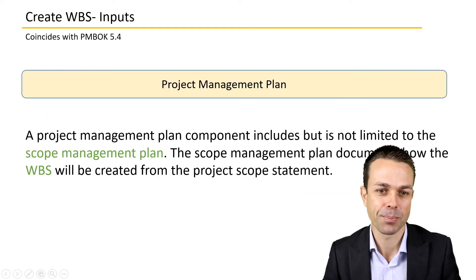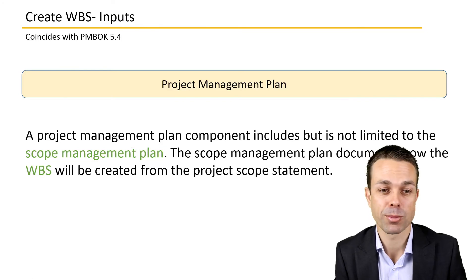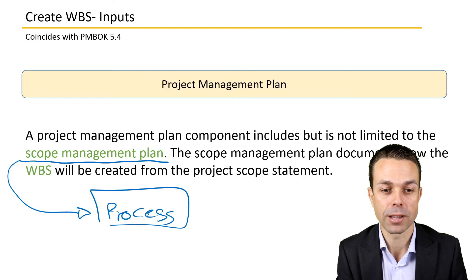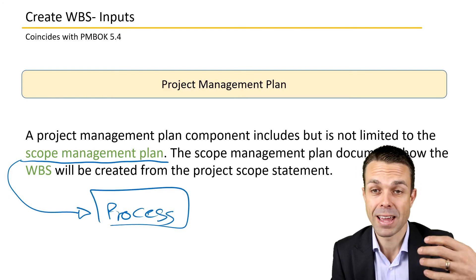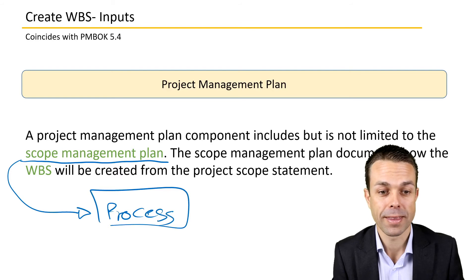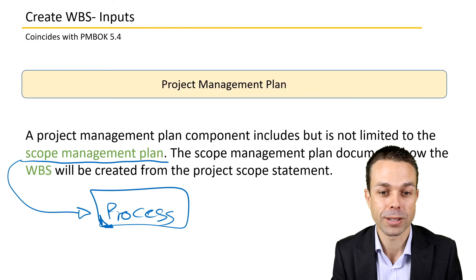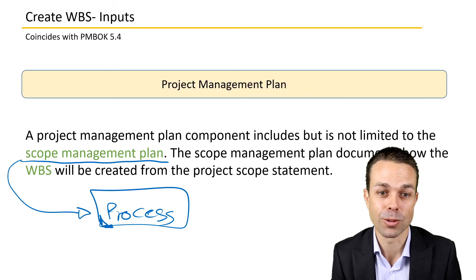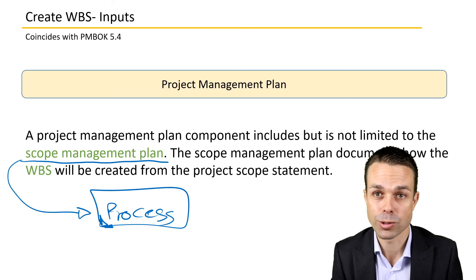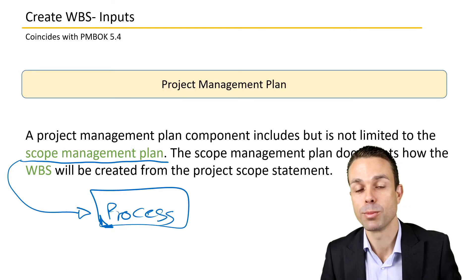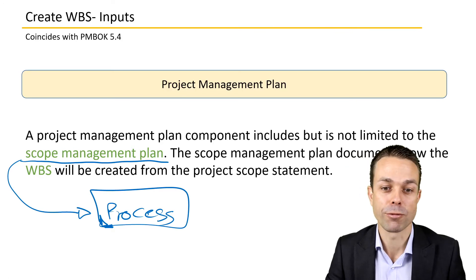Looking at inputs in more detail: the component of the project management plan that we need is the scope management plan — the actual process describing how we collect and collate requirements and break them down into activities. That should have been done during Plan Scope Management and describes who we're going to engage, what stakeholders are involved, what processes and tools we'll need. The scope management plan documents how the WBS will be created from the project scope statement.